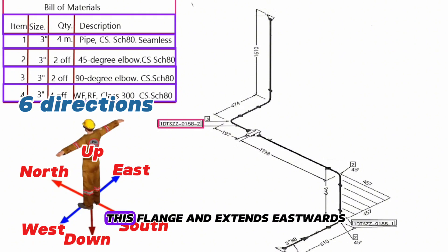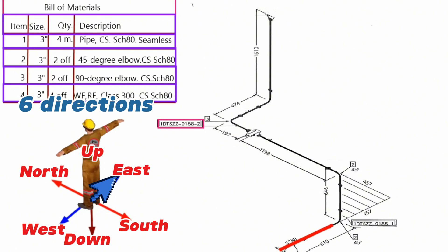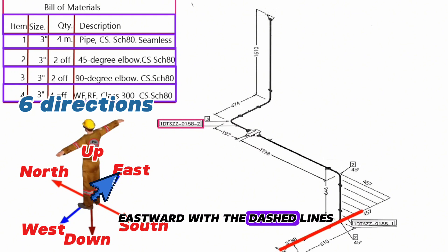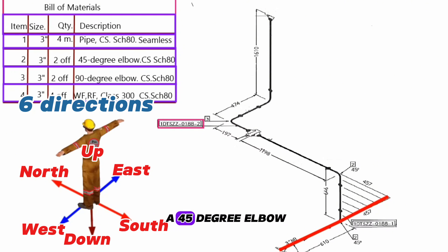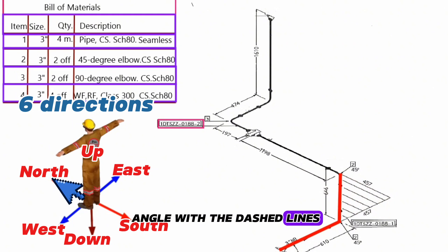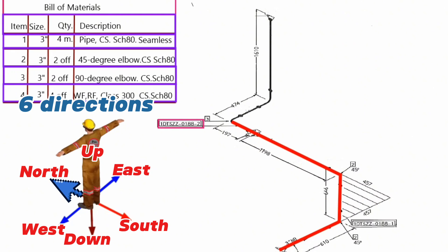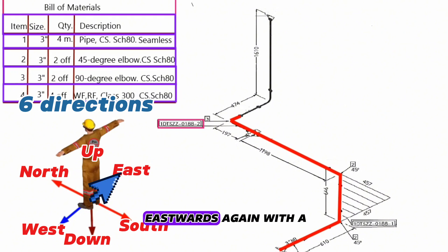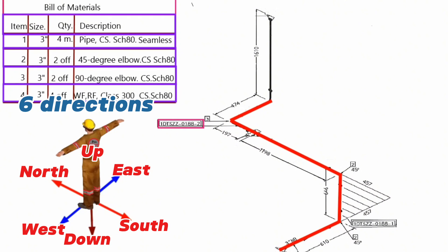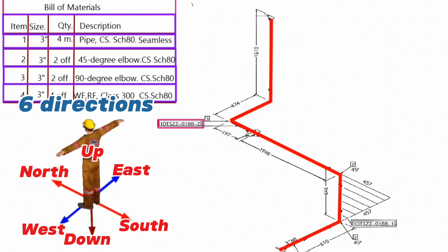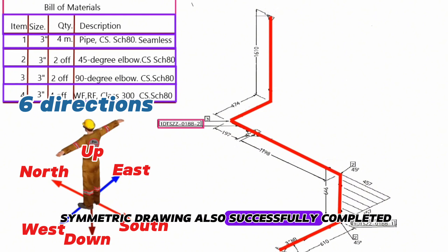The pipeline starts from this flange and extends eastwards. At this point, the pipeline first continues eastward with dashed lines, then turns north at a 45-degree elbow angle with dashed lines. The pipeline again turns northwards with a 45-degree elbow. Then the pipeline turns eastwards again with a 90-degree elbow. At last, the pipeline turns upwards at a 90-degree elbow. Reading of the piping isometric drawing is also successfully completed.